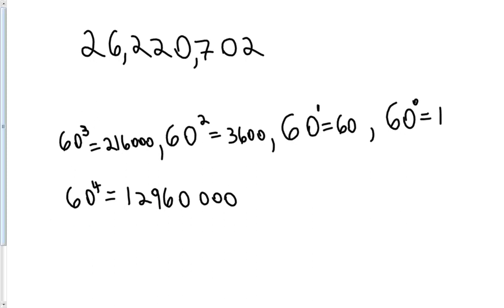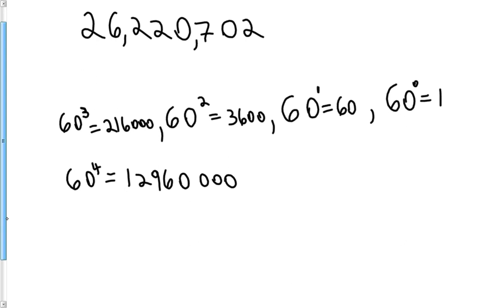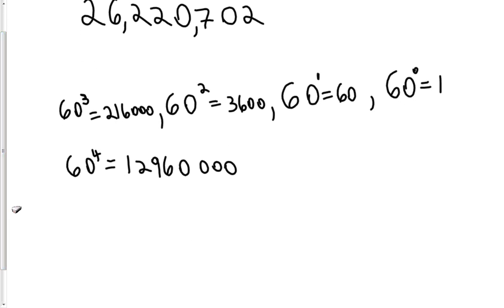So what we're going to do now is we're going to see which numeral is going to go in each place value. So we have one, two, three, four, five place values — this is going to be kind of like a five-digit number. We need to figure out what each one of those numerals that go in each of those five place values are. We're going to start from the place value furthest to the left and work our way to the right, starting with the 60 to the fourth place, or 12,960,000.